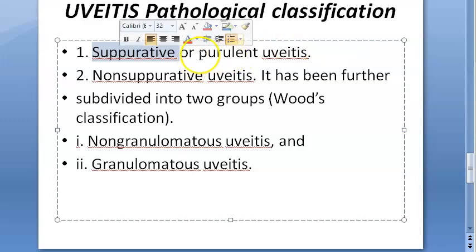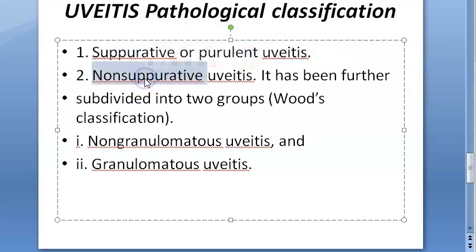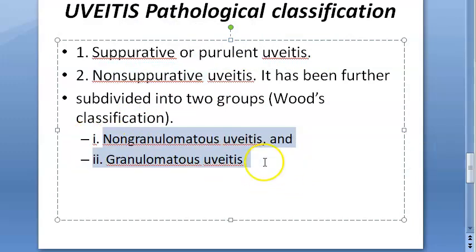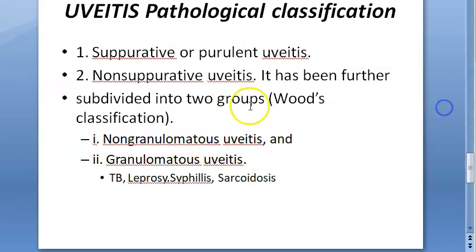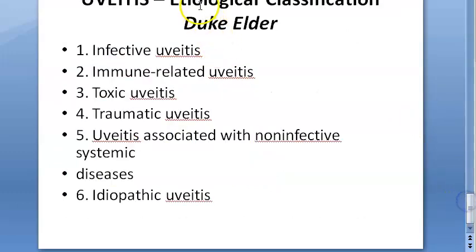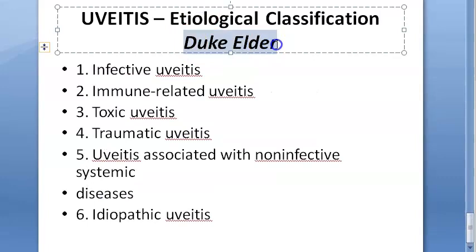Pathological classification includes suppurative (purulent) uveitis and non-suppurative uveitis. Under non-suppurative, you have granulomatous and non-granulomatous uveitis. Granulomatous uveitis is seen in conditions like tuberculosis, leprosy, syphilis, and sarcoidosis — the standard granulomatous diseases.